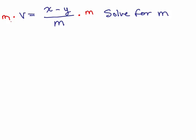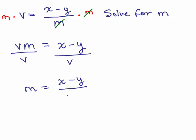So on the left side, I would have m times v, or I'm going to write that as vm. It doesn't matter if you write m times v or v times m. And on the right-hand side, the m's cancel. So I have x minus y. Now I want to solve for m. There's only m in one place. So I just need to divide by the coefficient of m. So if I divide both sides by v, I'm done. M equals x minus y over v.